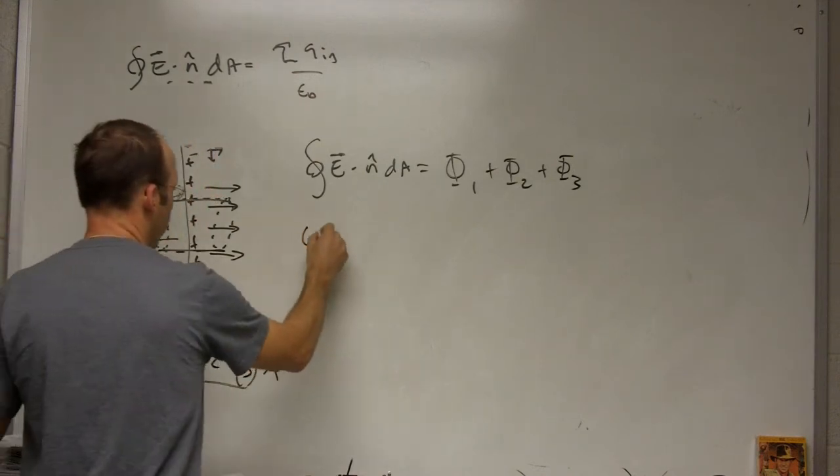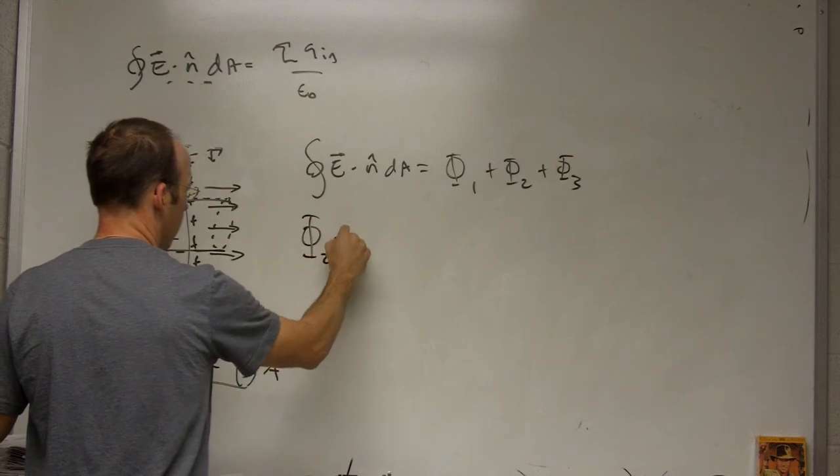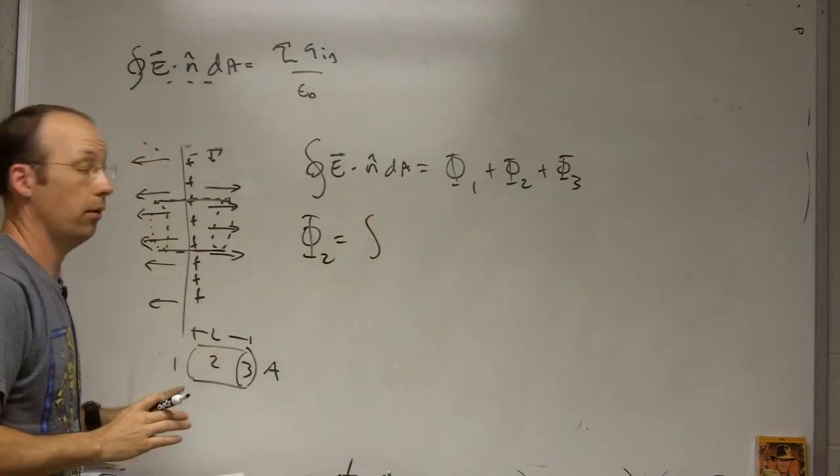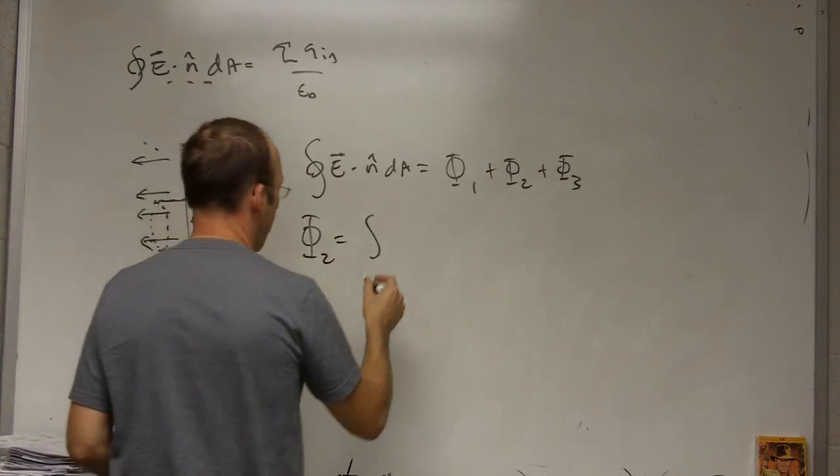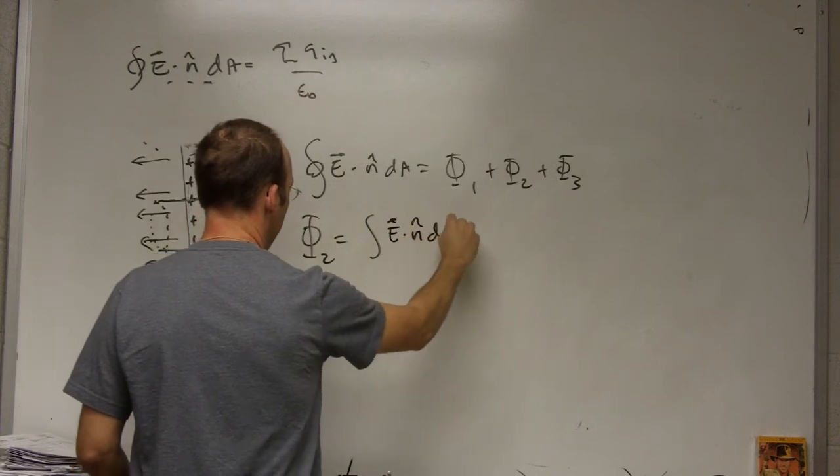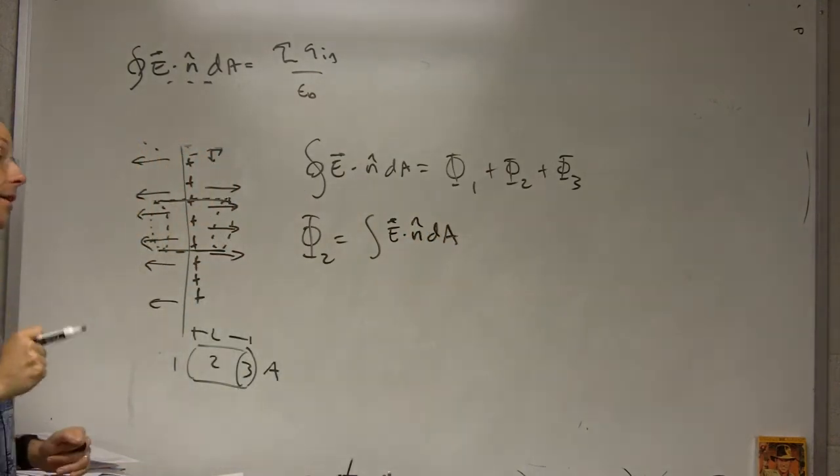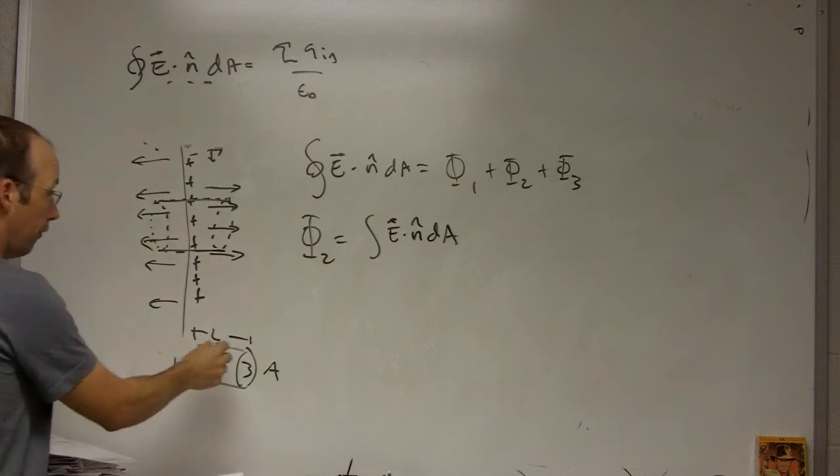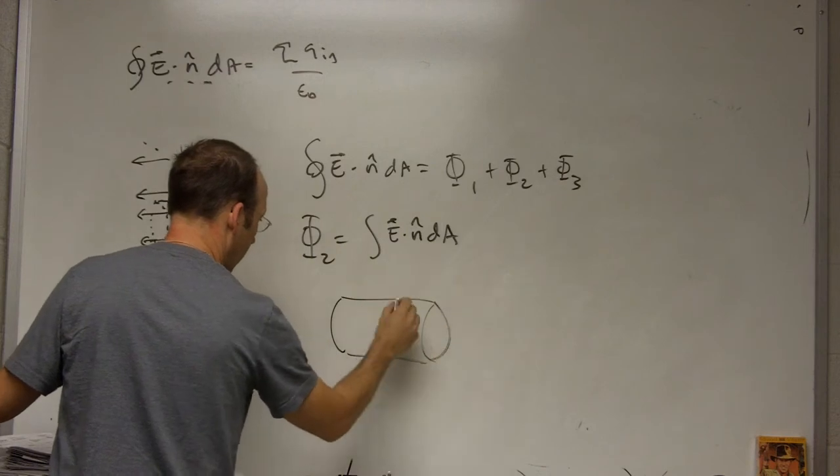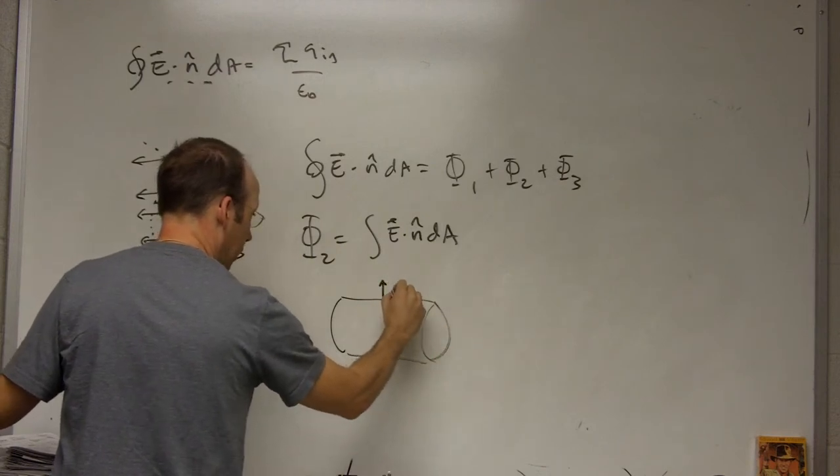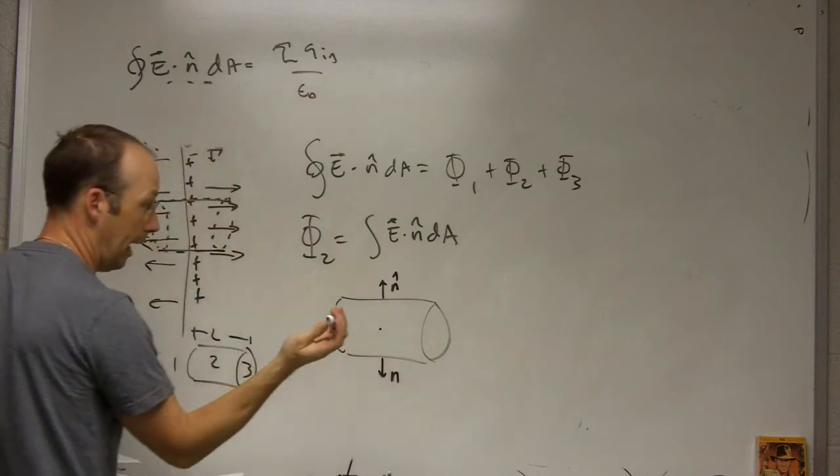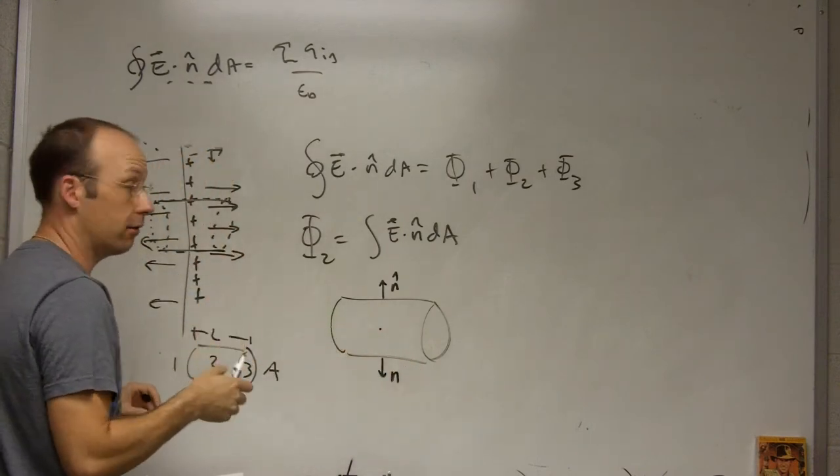Let me start with phi 2. It's going to be equal to the integral. Now, it's not a closed integral because I'm just going around that one surface area, it's not the whole thing. So it's just going to be E dot n hat dA. Now, I don't want to integrate, so I want to make it such that this is simple. But if I look at my side piece right here, anywhere along there, n hat is that way. Down here, n hat is that way. Right here, n hat is coming out. So it's always perpendicular to that surface area.